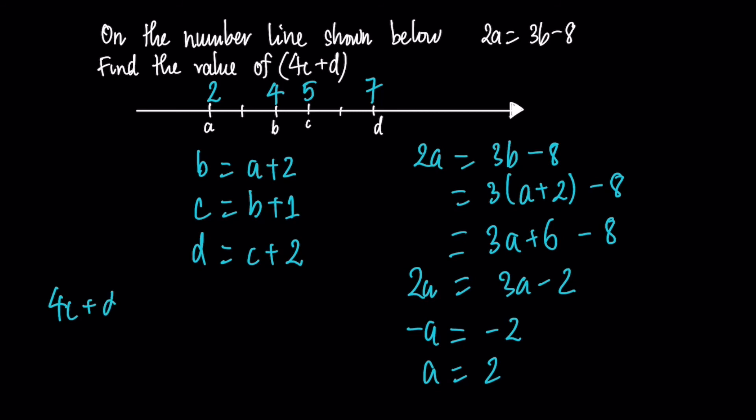4c plus d, now we can answer this question. Is equal to 4 times 5 plus 7 is 27.